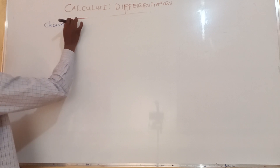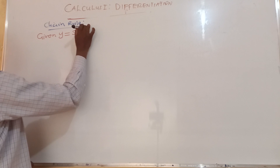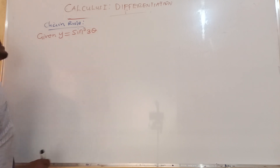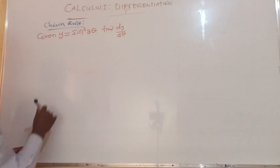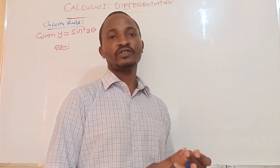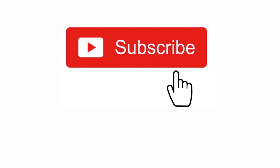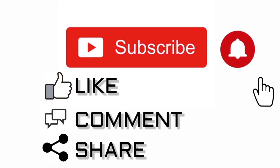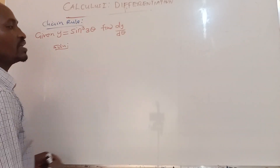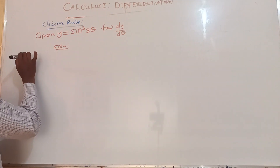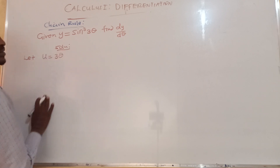For example, given y is equal to sine cubed 3θ, find dy/dθ. Here you have three functions — this is a function of a function of a function. We have the outermost function which is the cube function, then the second function is the sine function, and the innermost function is 3θ. We can differentiate this using chain rule.